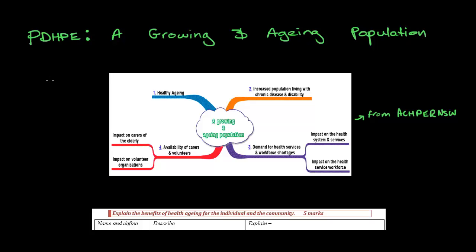Hey everyone, today I'm going to be talking about the PTHP Core 1 in health priorities in Australia. The priority area that I'm going to be talking about is the growing and aging population. I recently had to do this for an assessment task, so this is all fresh in my head and I just thought I'd help everyone else out by putting it up in a video.